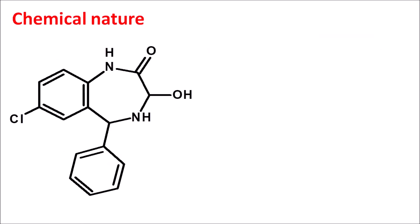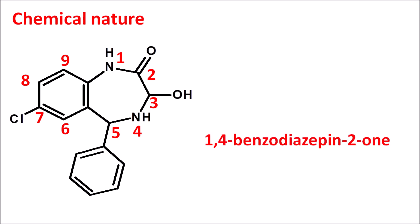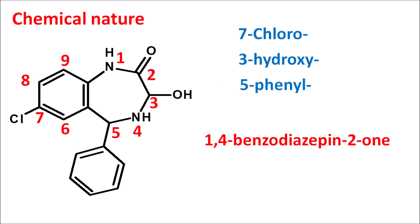Now let us see the chemical nature of this drug. This is the structure of Oxegepom — we can observe the benzodiazepine ring system. Starting the numbering from the nitrogen: positions 1 through 9. It is a 1,4-benzodiazepine with nitrogens at the first and fourth positions, and a ketone group at the second position — written as 1,4-benzodiazepine-2-one. At the seventh position a chlorine group is present, and at the third position a hydroxyl group (3-hydroxy) responsible for the polarity and short duration of action. At the fifth position there is a phenyl ring, with 1,3-dihydro saturation — that is the complete name of Oxegepom.